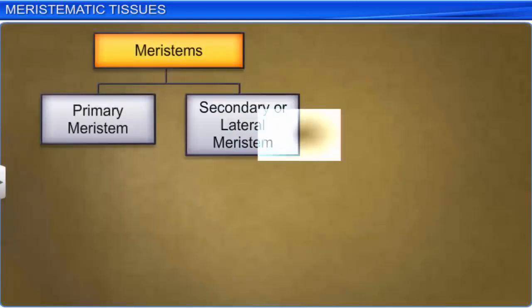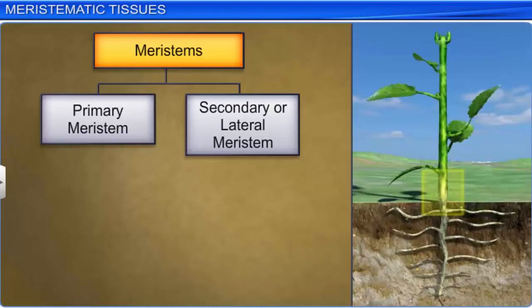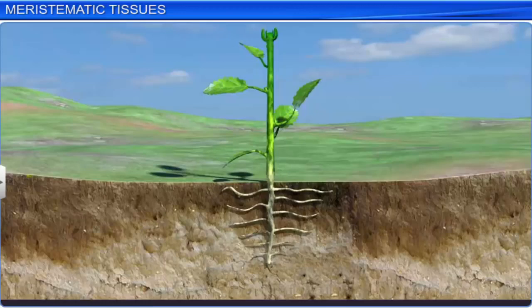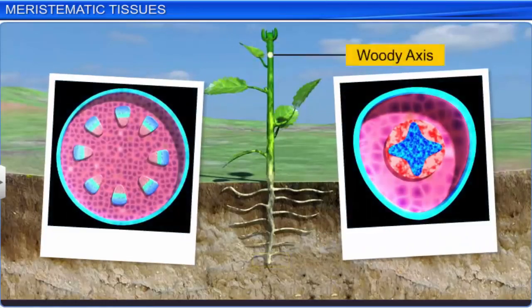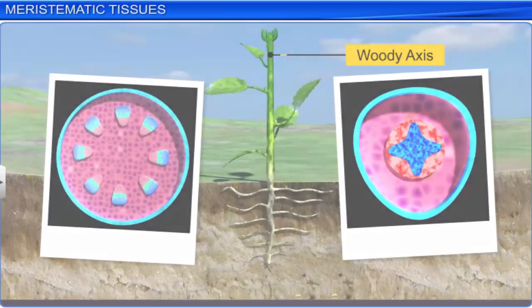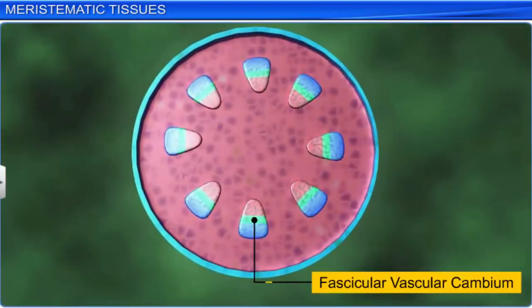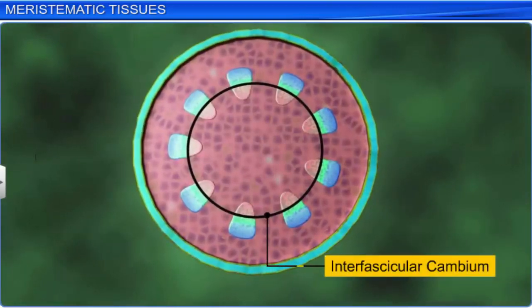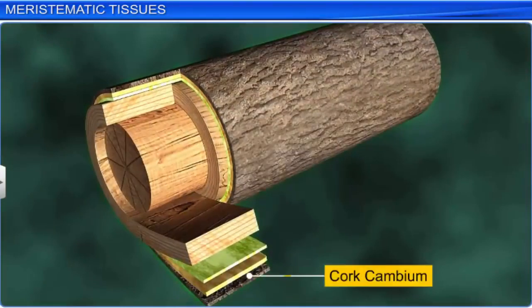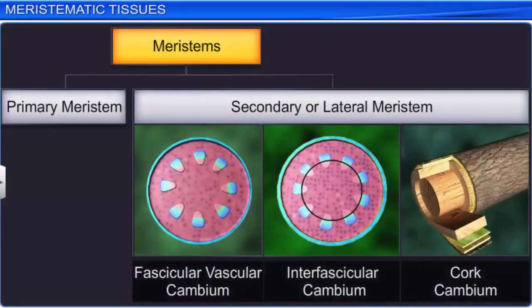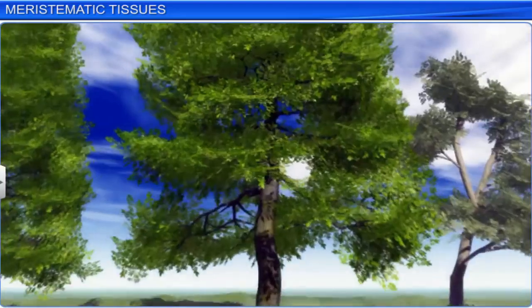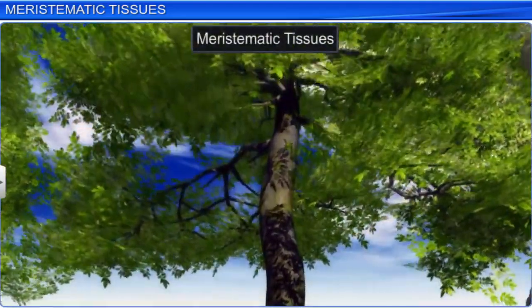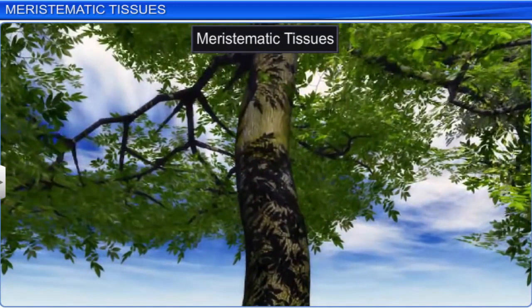Meristem that appears later in a plant's life is called secondary or lateral meristem. It occurs in the mature regions of the roots and shoots of many plants. Secondary meristem is responsible for producing woody axis and secondary tissues. Fascicular vascular cambium, interfascicular cambium, and cork cambium are some examples of secondary meristems. Thus, meristematic tissues play a vital role in the primary and secondary growth of a plant.